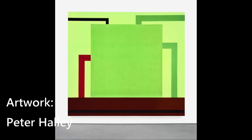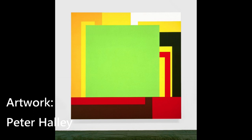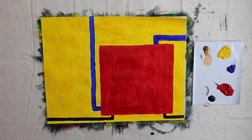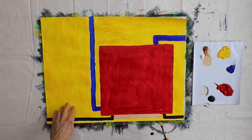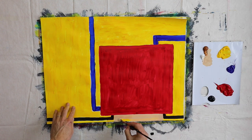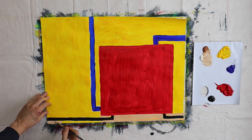Peter Halley's blocks are all placed on the ground — here on brown and this one on red. My red block is floating in a sea of yellow. So I mix brown with titanium white, which makes my transparent paint opaque, and turn my square into a landscape painting with a house.